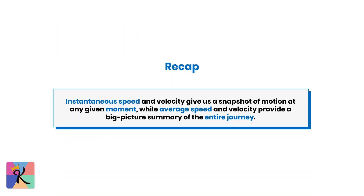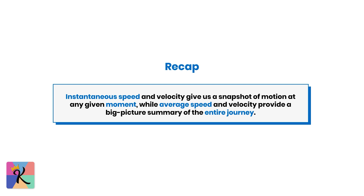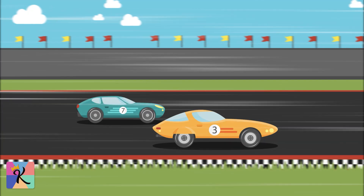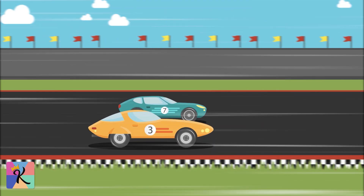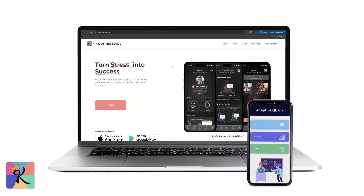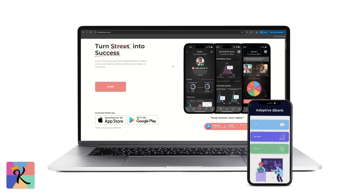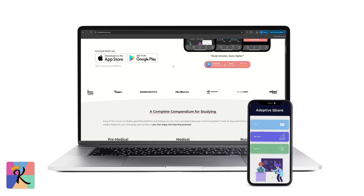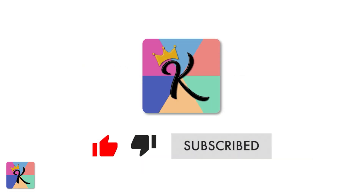So, to recap: instantaneous speed and velocity give us a snapshot of motion at any given moment, while average speed and velocity provide a big picture summary of the entire journey. Understanding the differences between these concepts allows us to describe and analyze motion with precision. Thanks for joining us. If you enjoyed learning about the differences between speed and velocity, make sure to subscribe and check out kingofthecurve.org for more in-depth resources to help you master these concepts and apply them to real-world scenarios. See you next time!